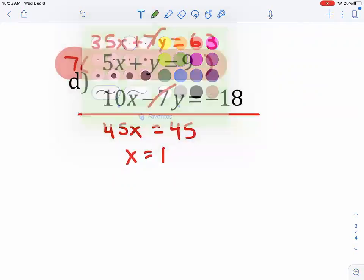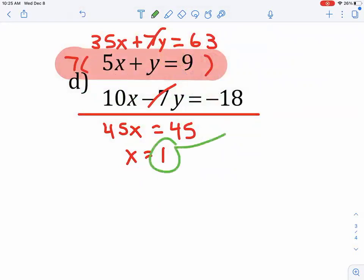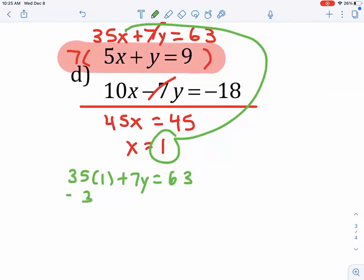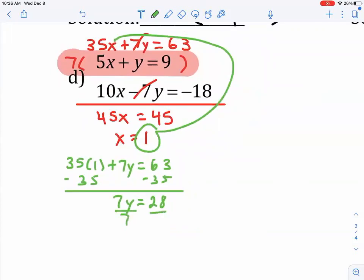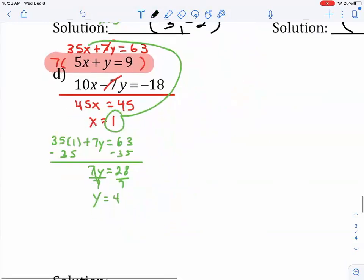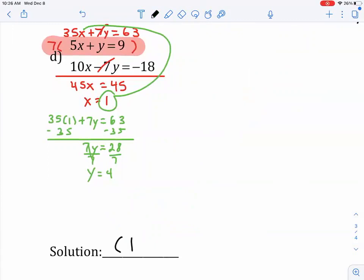And now that I know that X is 1, I can plug that back in to any of the equations. So, I'm going to do 35 times 1, which is just 35, plus 7Y is equal to 63. So, I'll subtract 35 from both sides. I've got 7Y equals 28. And divide by 7, and Y comes out to be 4. Our solution is X is 1, and Y is 4.